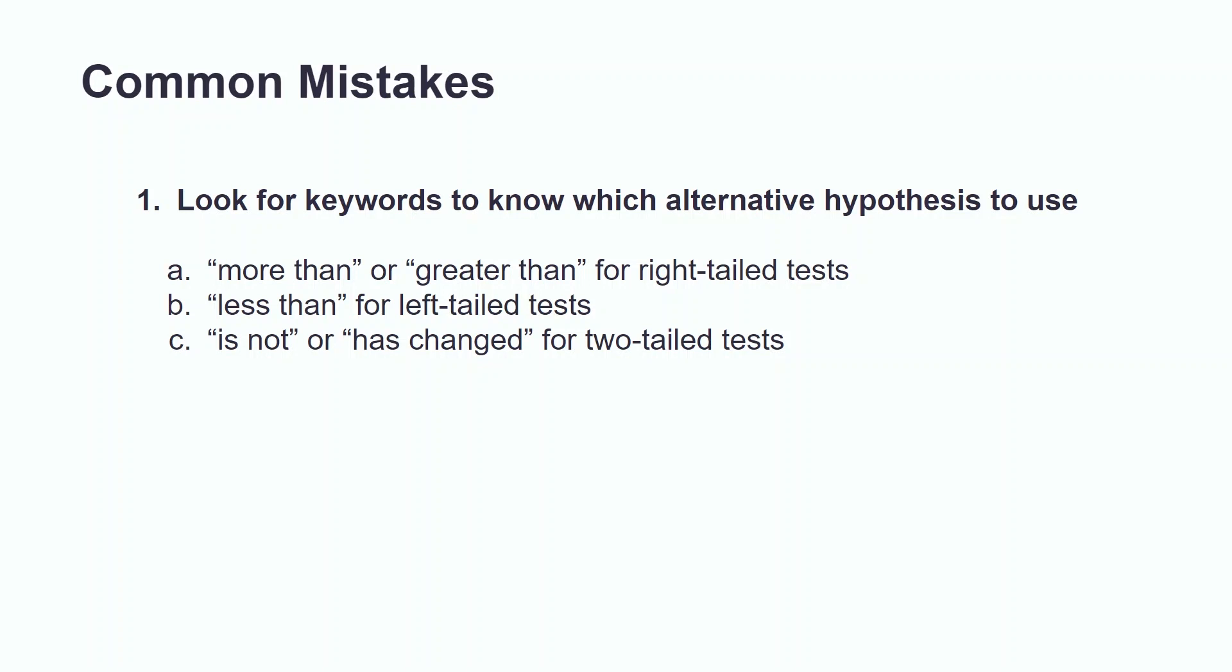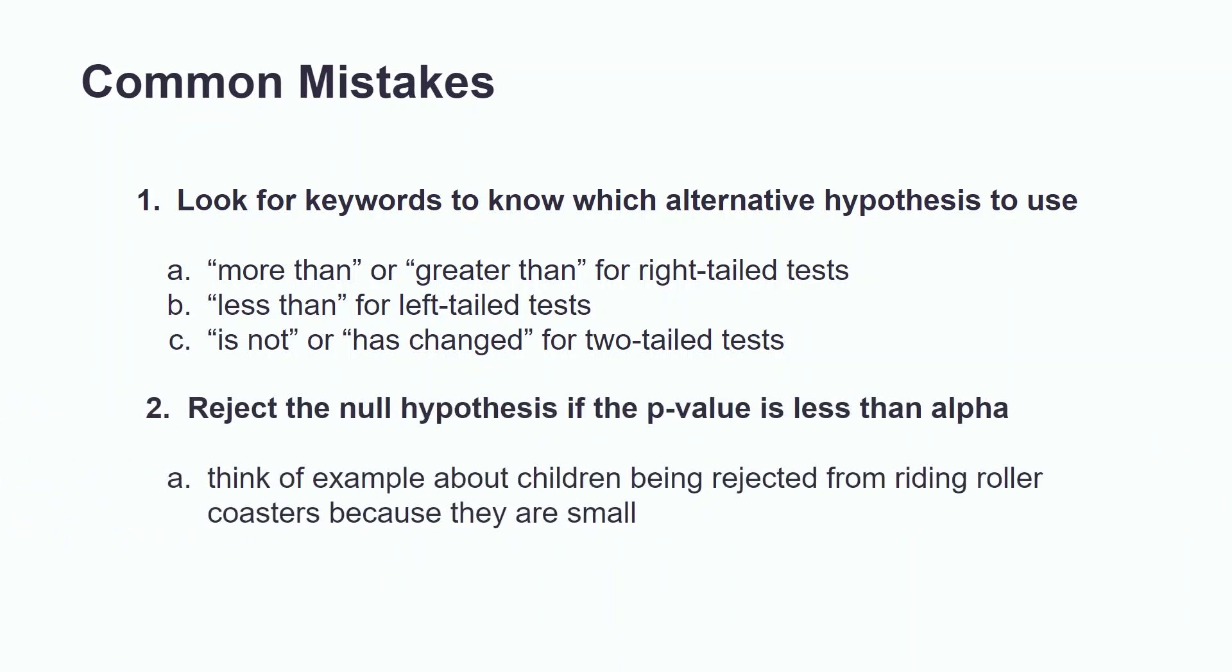Additionally, many students mix up when to reject and to fail to reject their null hypothesis based on their p-value. An analogy I like to use to remember when to reject the null hypothesis is kids trying to ride roller coasters. As a young child, I always wanted to ride big roller coasters, but I was rejected for being too small. In this example, the child is the p-value and they are getting rejected for being too small. That being said, always reject the null hypothesis if the p-value is smaller than alpha.